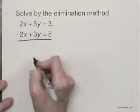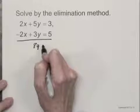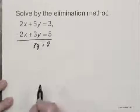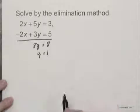2x minus 2x is 0x, or 0. 5y plus 3y is 8y, and 3 plus 5 is 8. I can solve this equation for y by dividing by 8 on both sides, and I get y equals 1.